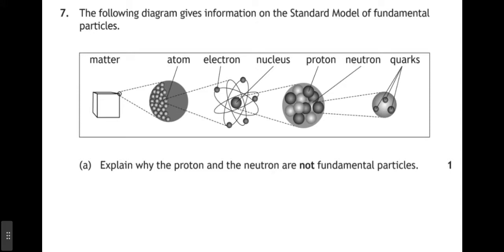It says the following diagram gives information on the standard model of fundamental particles. And you can see a diagram showing the zooming in on a piece of matter. So we zoom in one stage and we can see the atoms within that piece of matter. If we zoom in on one atom, then we can see the nucleus and the electrons orbiting that.